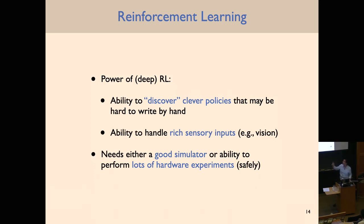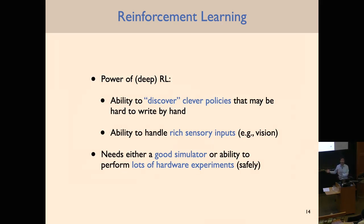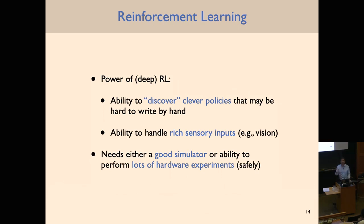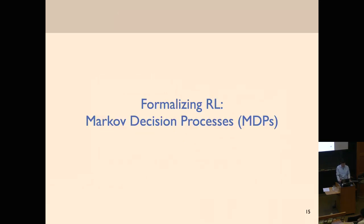In practice, to apply deep reinforcement learning you either need a good simulator or the ability to perform lots of hardware experiments. The trial and error learning process can take many iterations, during which the robot might do silly things. Google's arm farm addressed this by setting up many different arms with lots of objects and automating the data collection process.